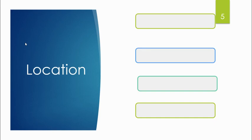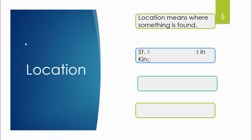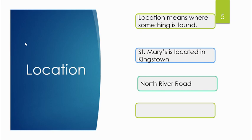When we talk about location, what do we mean? Location means where something is found. Where can we find our school? St. Mary's is located in Kingstown. Kingstown is the capital city. Our school is on North River Road.